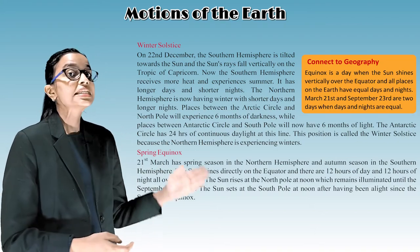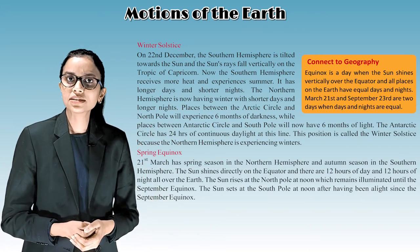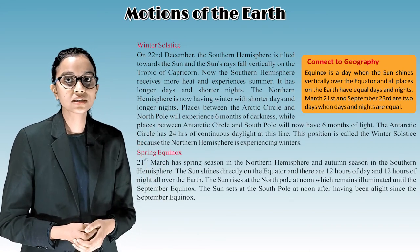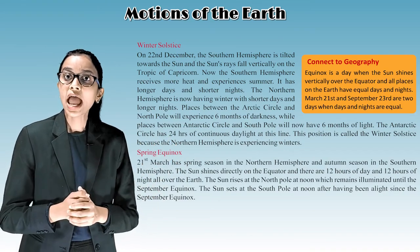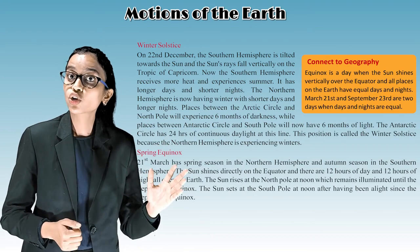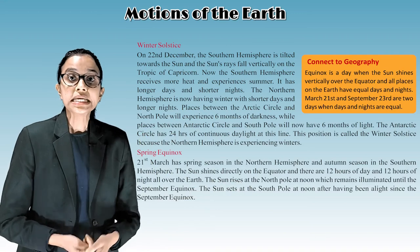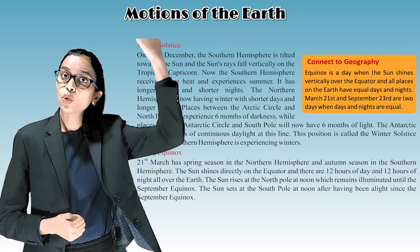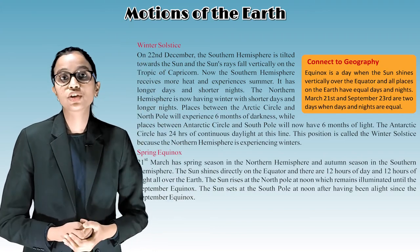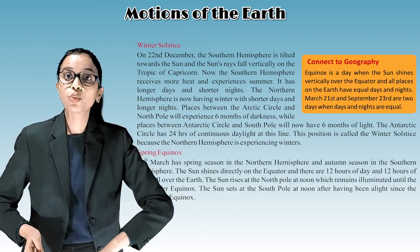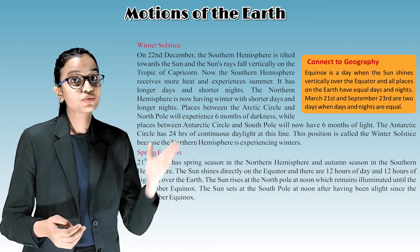Spring equinox: On 21st March, there is spring season in the northern hemisphere and autumn season in the southern hemisphere. The sun shines directly on the equator and there are 12 hours of day and 12 hours of night all over the earth. The sun rises at the north pole at noon, which remains illuminated until the September equinox, and the sun sets at the south pole at noon after having been alight since the September equinox.